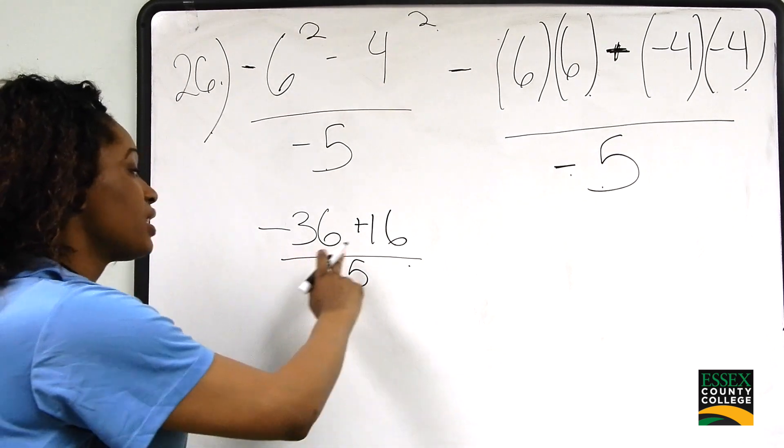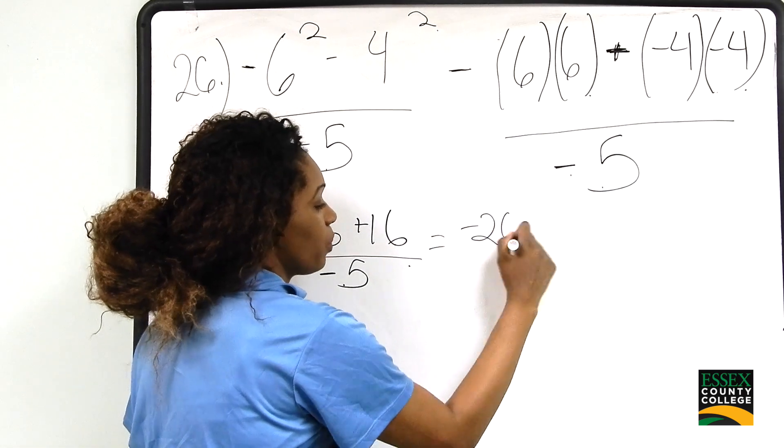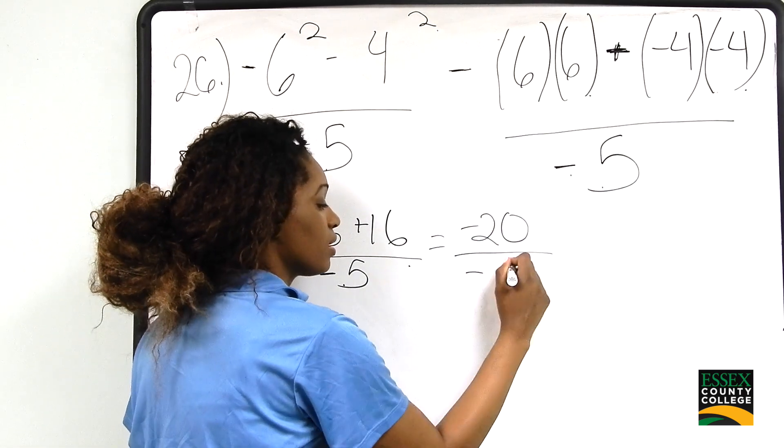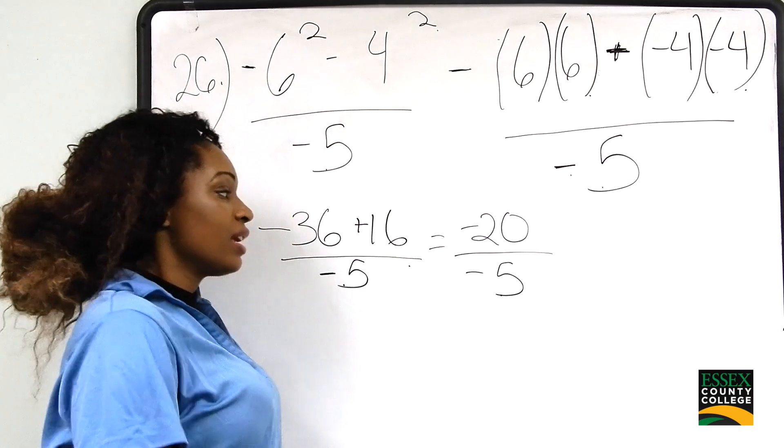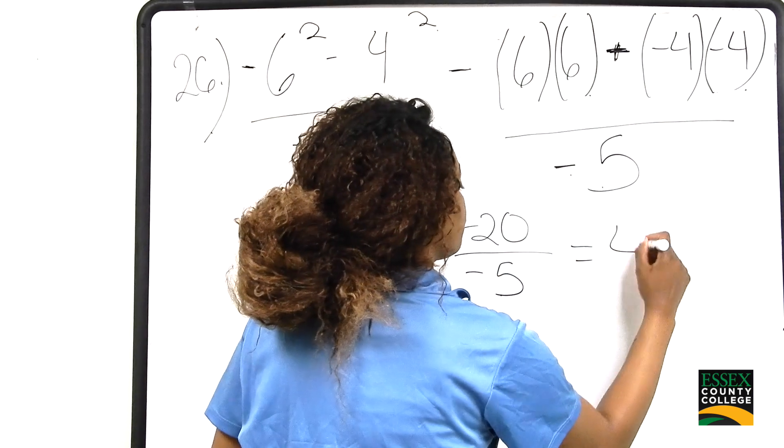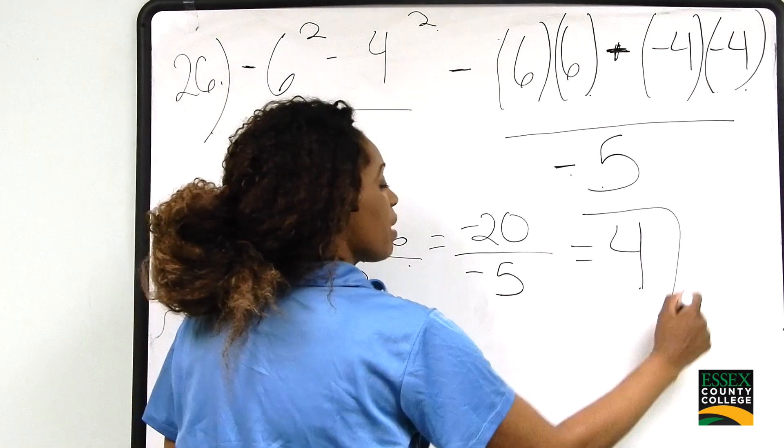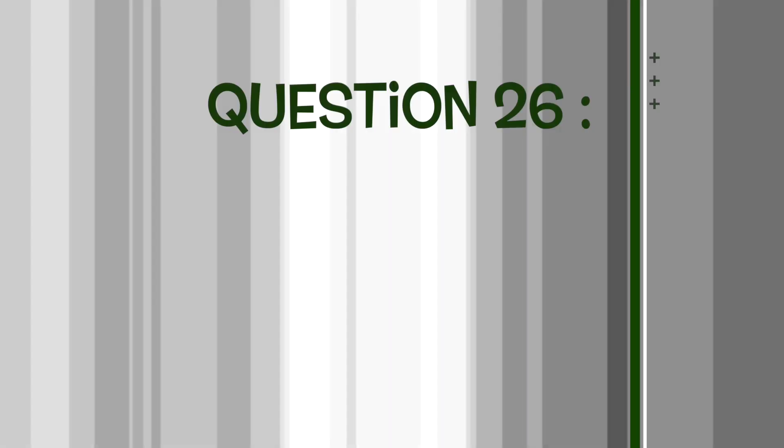Negative 36 plus 16 gives us negative 20. Negative 20 divided by negative 5 gives us a positive 4. The final answer for number 26 is positive 4.